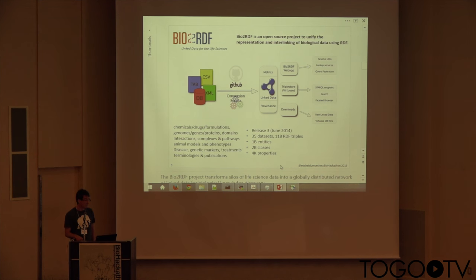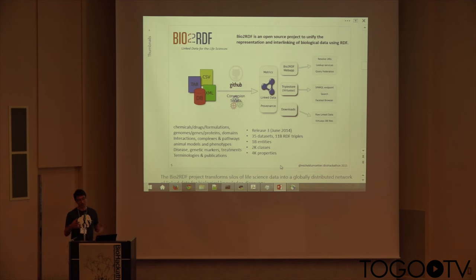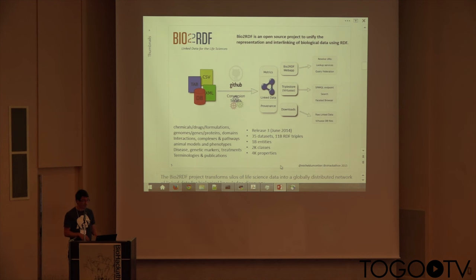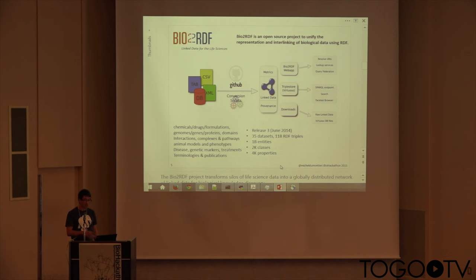Our base dataset is Bio2RDF, a project I run which attempts to take data that is often available in a myriad of different incompatible formats and turns it into RDF. More importantly, we try to fix the data so that references between different data sets finally connect together as they should. In the release we did last year, we have 35 datasets, over five from outside sources, 11 billion RDF triples, a billion entities, 2,000 classes, and 4,000 properties. The network contains everything from proteins to genes, diseases, pathways, and interactions.